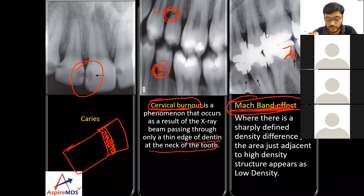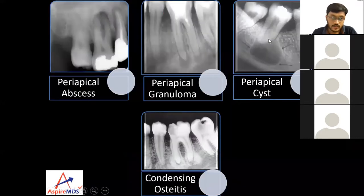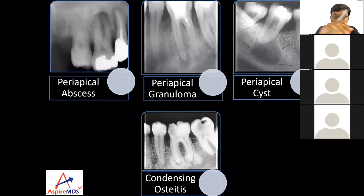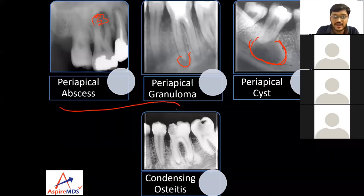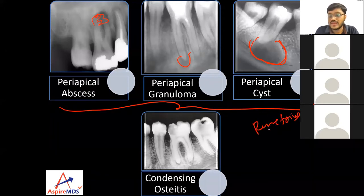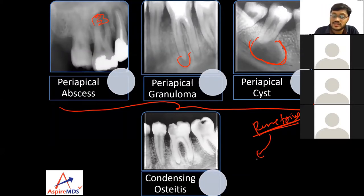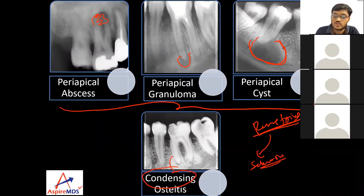Other findings include periapical abscess, granuloma, and cyst. Based on size: periapical abscess has hazy radiolucency and irregular margins; a periapical granuloma is smaller in size; and the cyst is larger with well-defined corticated margins. All three — periapical abscess, granuloma, and periapical cyst — are rarefying reactions, meaning the bone appears radiolucent. Then we have a sclerosing reaction known as condensing osteitis, which is seen attached to the tooth.